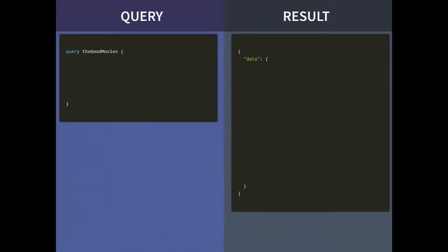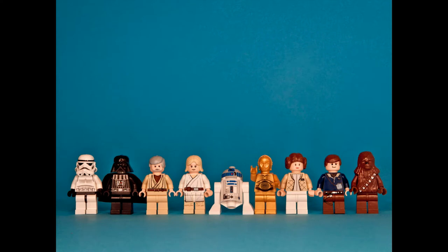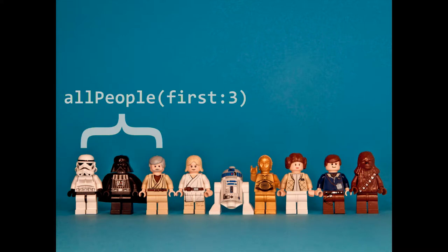Let's look at something really common: when we have many items. We only got Luke Skywalker before. Now we want to get only the good Star Wars movies — the first three. In GraphQL you can already see the mirroring: I have a 'films' array, I receive a few films, and I wanted the episode ID and the title. We know all the good films — episodes four, five, and six. That was a simple pagination getting only the first three items.